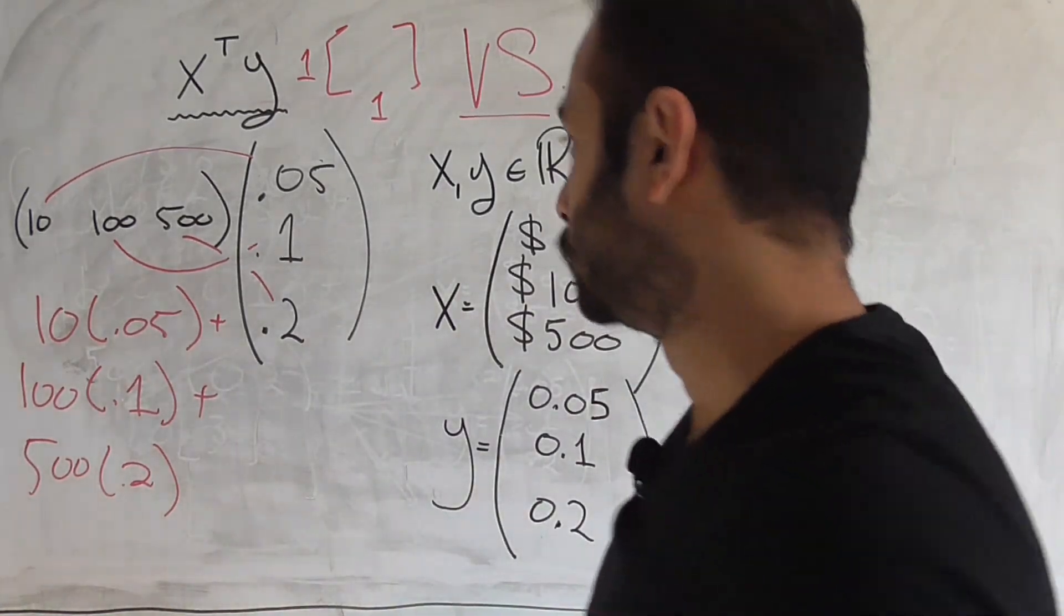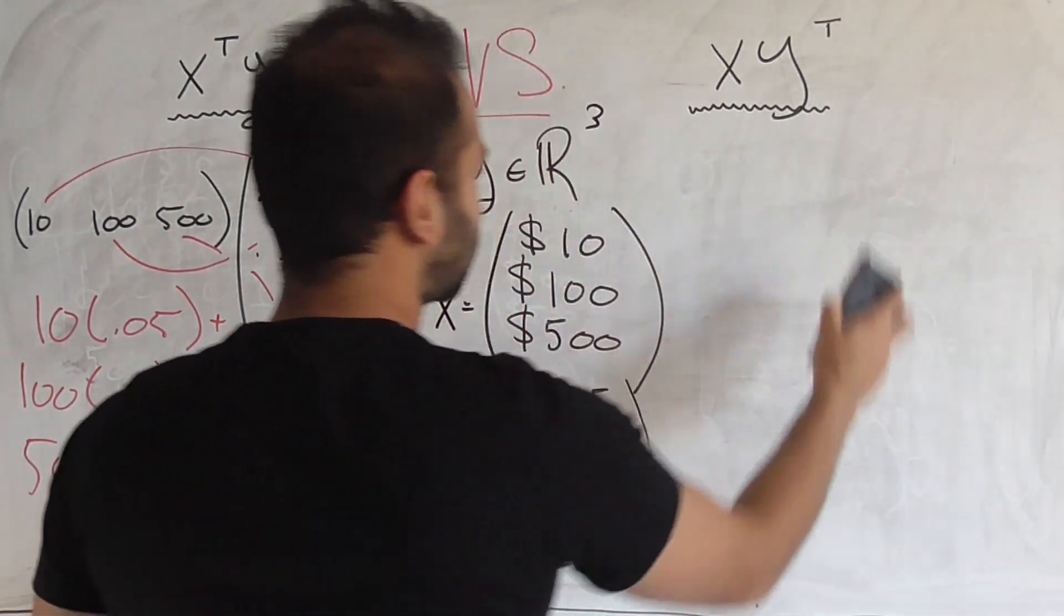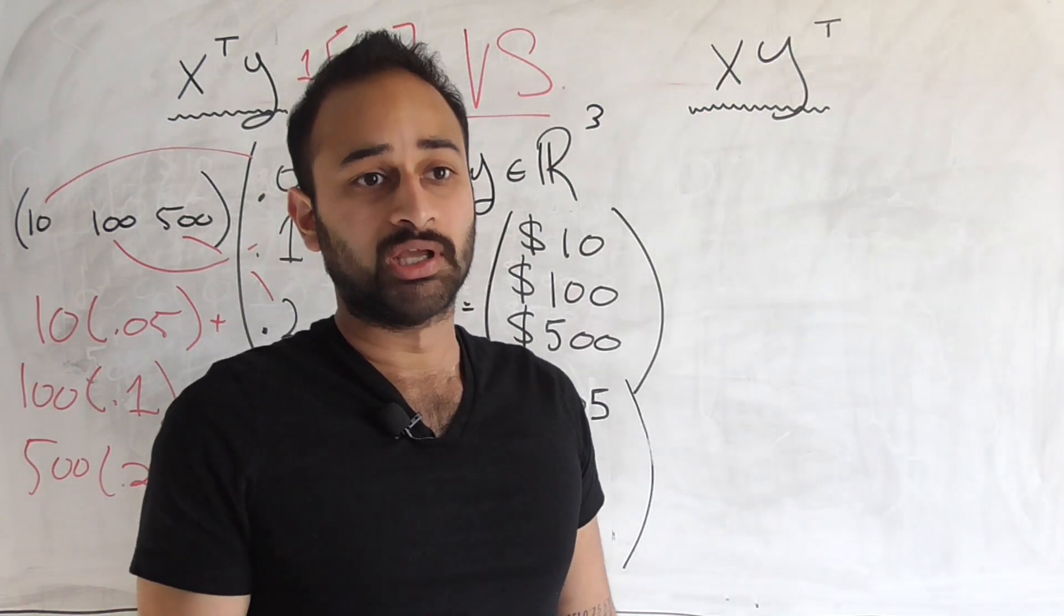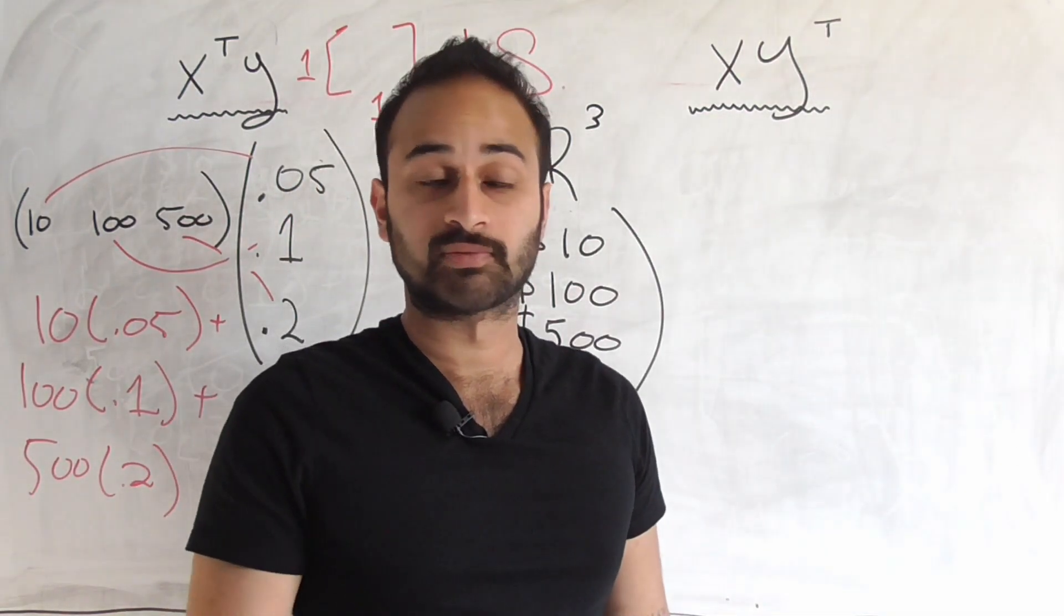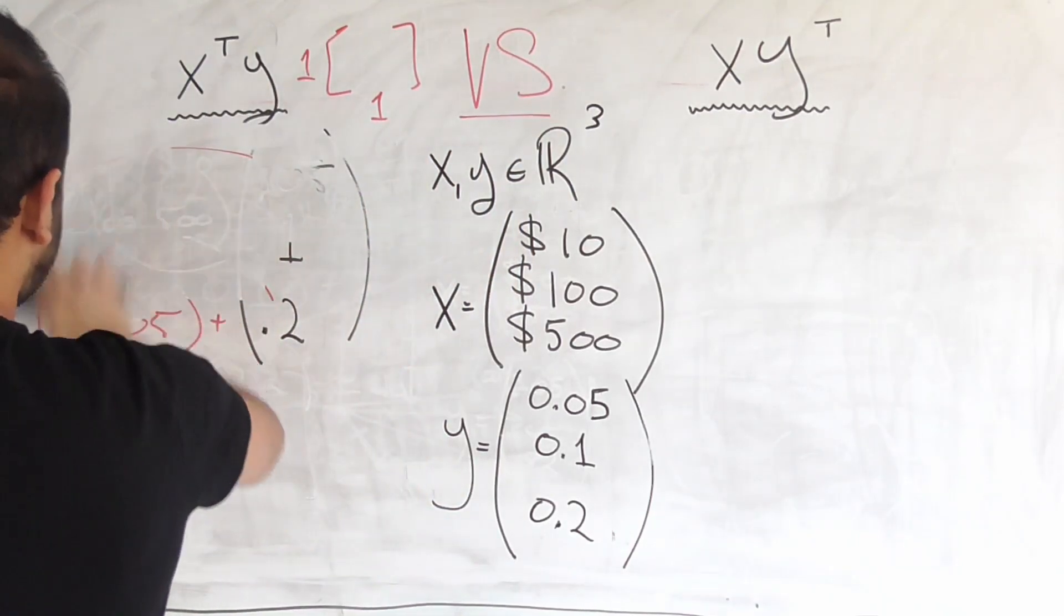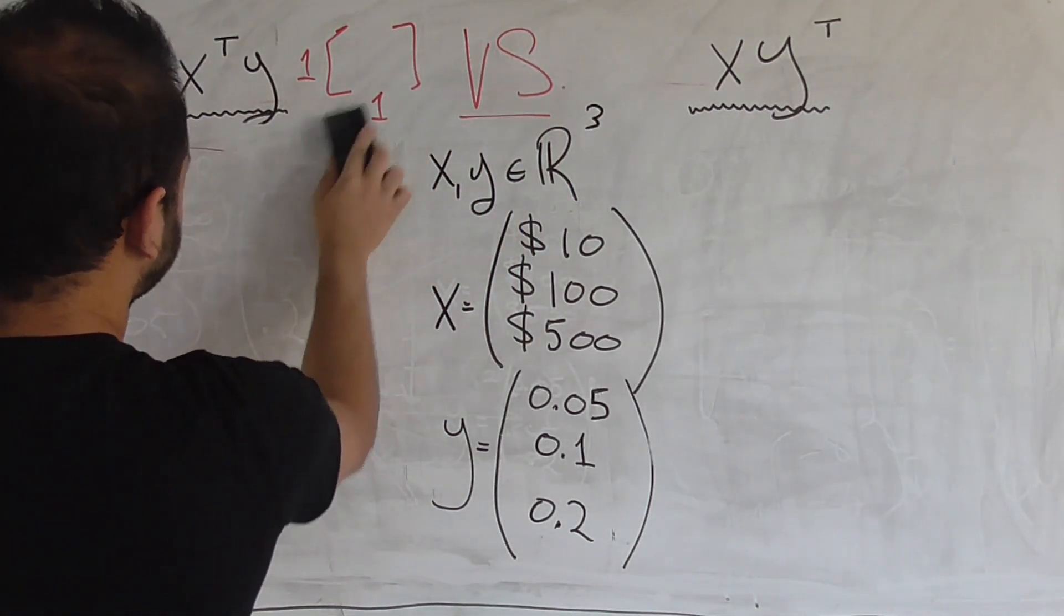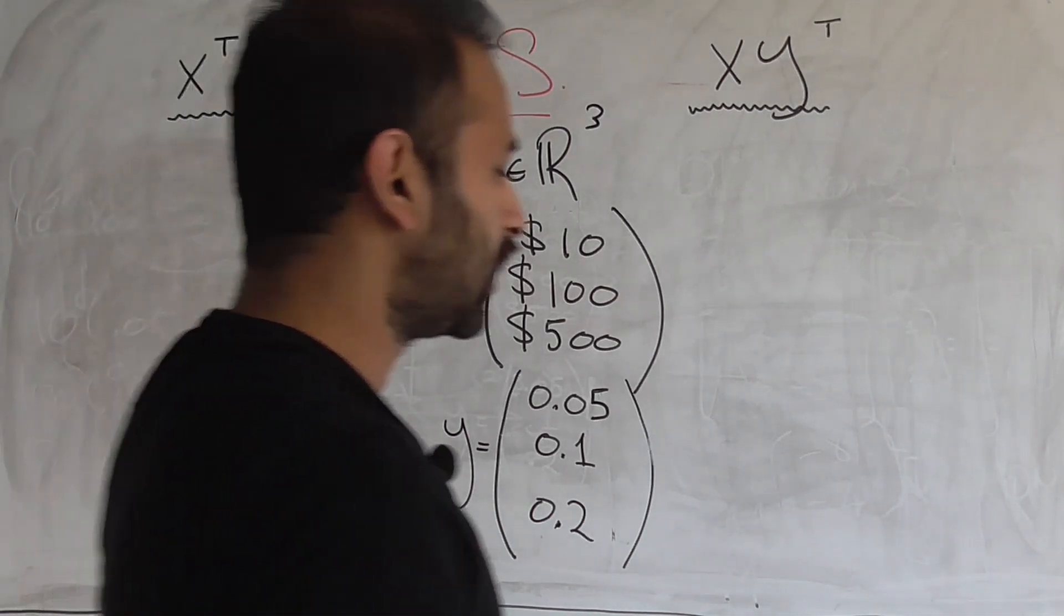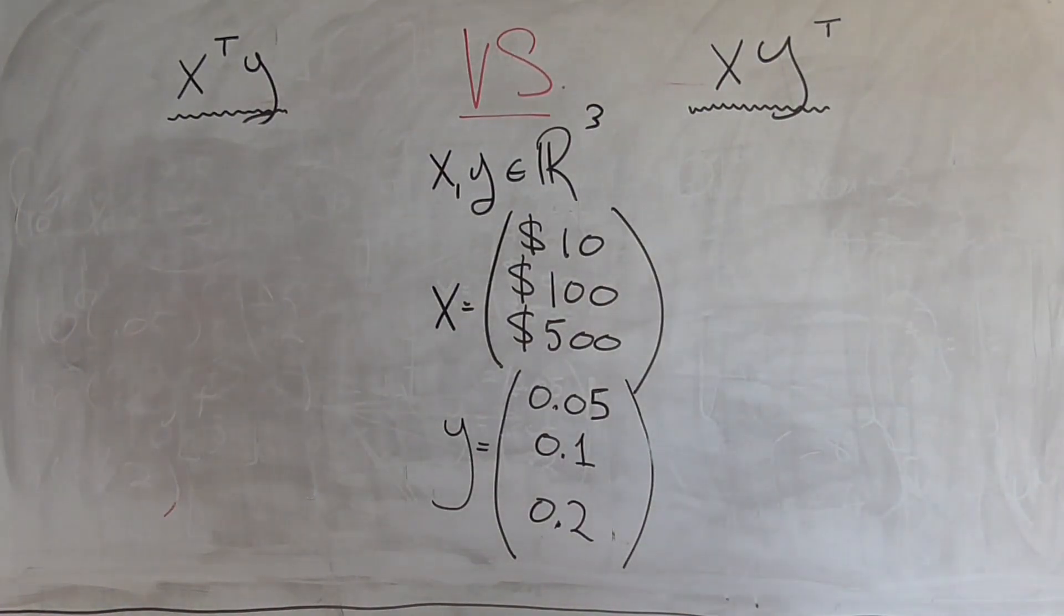The trickier one to talk about is going to be XY transpose. That's the one that doesn't come up as often, but it still ends up being pretty important in the study of data science machine learning. So let me get rid of everything on this side of the board, because we're done understanding this guy.